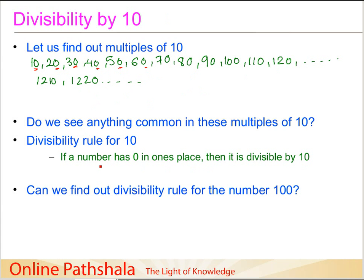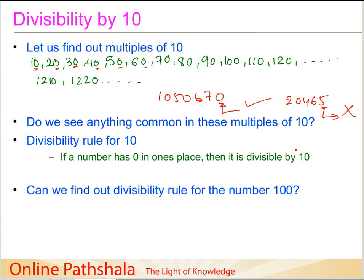If a number is given to you — let us say 1,050,670 — can you quickly say whether this is divisible by 10 or not? You just have a look at the units place. In this case it is 0, so it is divisible by 10. But if on the other hand you had a number like 20,465, it is not divisible by 10 because it doesn't have a 0 — it has a 5 in the ones place — so it is not divisible by 10.